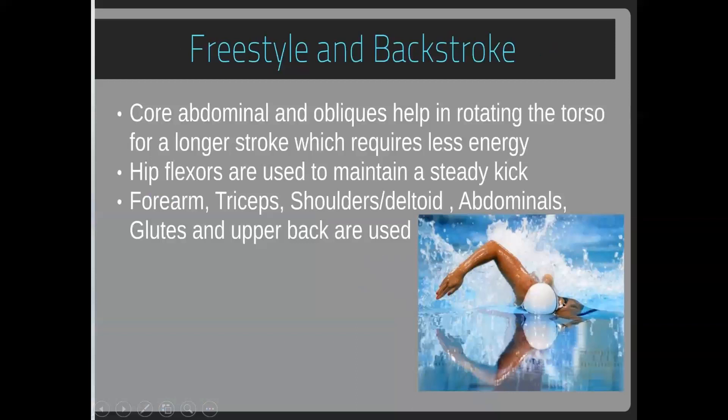For freestyle and backstroke, core abdominals and obliques help rotate the torso for a longer stroke which requires less energy. Hip flexors are used to maintain a steady kick. Forearm, tricep, shoulder, deltoid, abdominals, gluteus, and upper back muscles are all used.